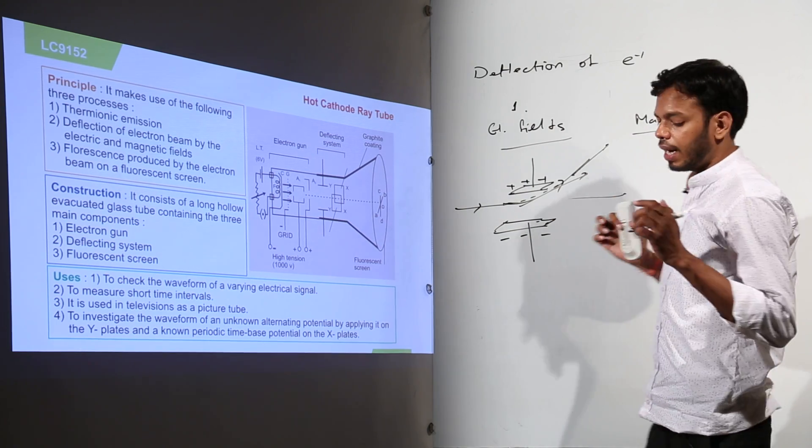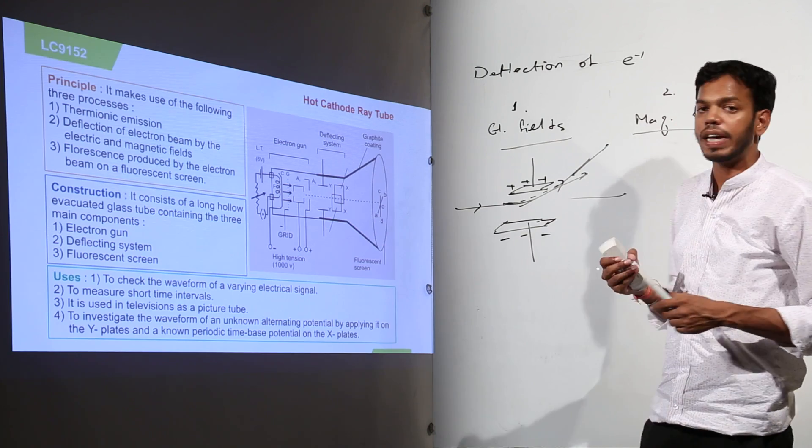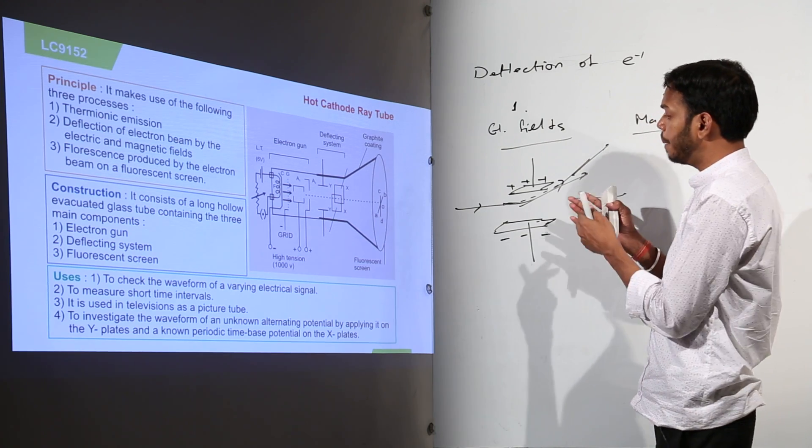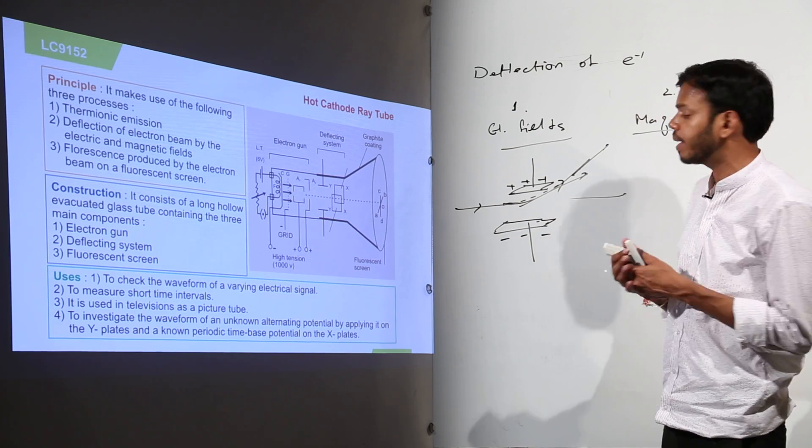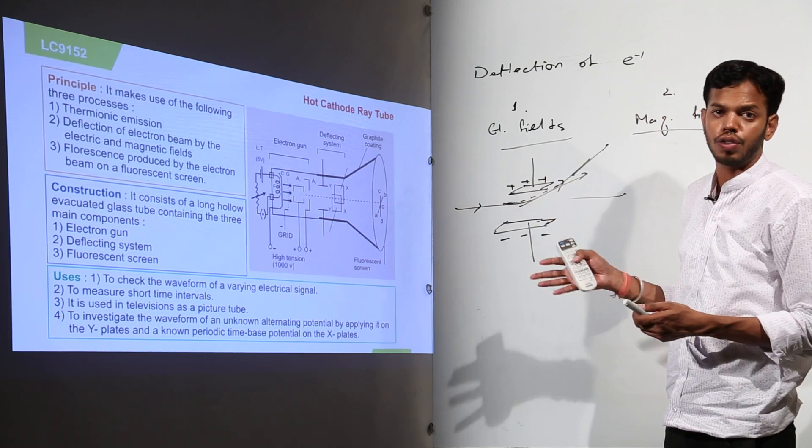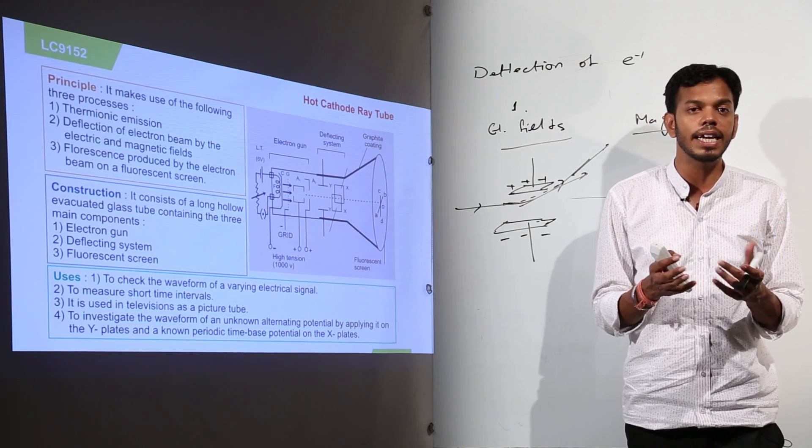Now for magnetic field, how do we represent magnetic field? For electric field it was very simple for me to represent, I wrote positive charges and negative charges. I know that electric fields are from positive to negative. But for magnetic field there must be some way to represent magnetic field. Yes, there are, that is cross and dots.